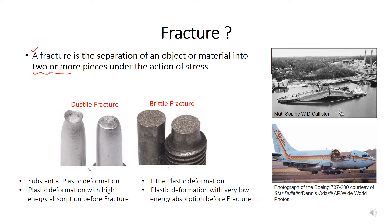The key point here is the separation of an object or material into two or more pieces. If it gets broken down into two or more pieces, we say it is fractured. A component broken into two or more pieces cannot perform its function with that much efficiency, so we say that component is also failed. The ship is fractured as well as failed, and here the fuselage of this airline has been blown away — this is a type of fracture and the airline has also failed because you cannot use it for flying purposes unless it is repaired.